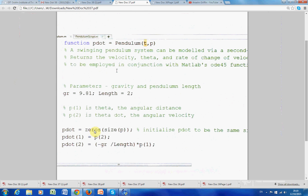P dot, we're just initializing. Remember, we're going to get a column for displacement, and we're going to get a column for velocity. So, we just initialize it to zero.